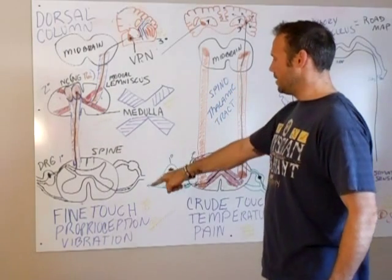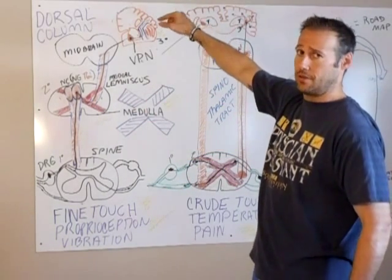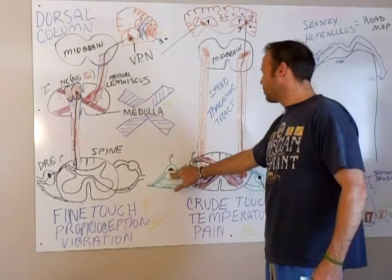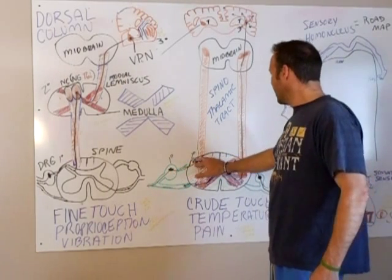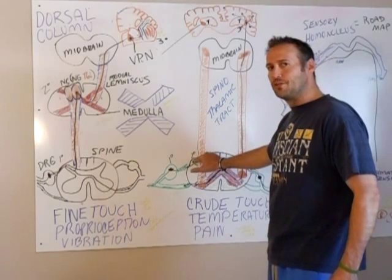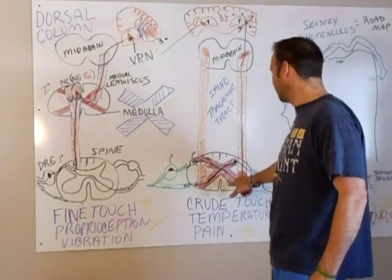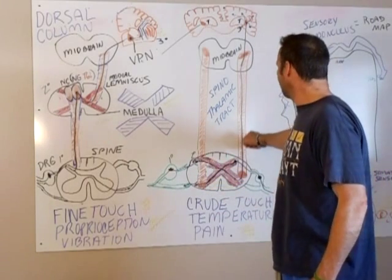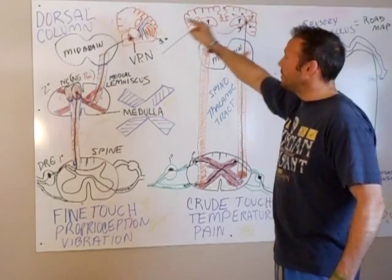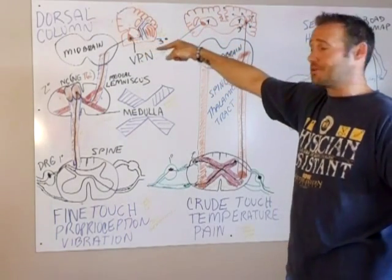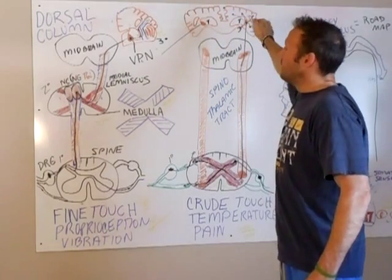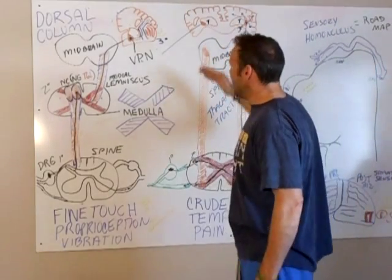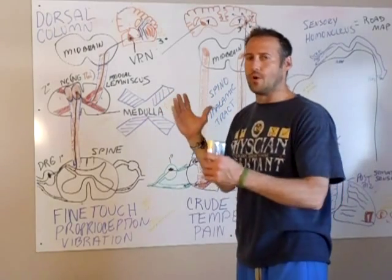Now the spinothalamic tract. Unlike the dorsal column where it ascends to cross in the medulla, the spinothalamic tract — after the primary sensory neuron — synapses with the secondary neuron in the dorsal horn and then crosses at the level it enters the spinal cord. It then travels up the spinothalamic tract through the midbrain, and like the dorsal column, the third neuron lies in the VPL — the ventral posterolateral nucleus. So the main difference between the dorsal column and the spinothalamic tract is where it crosses.